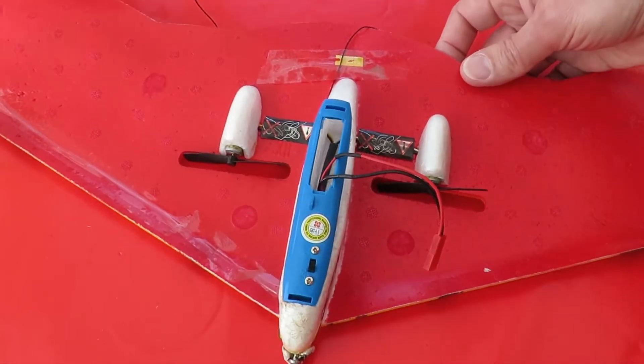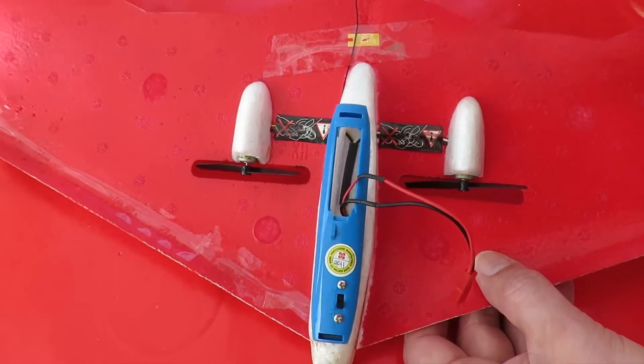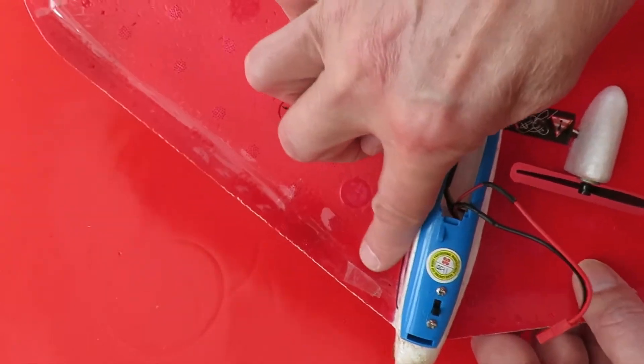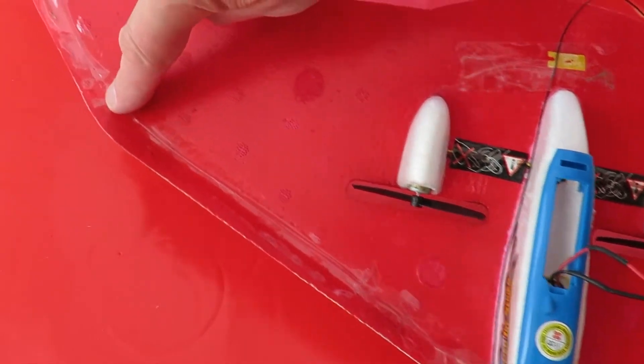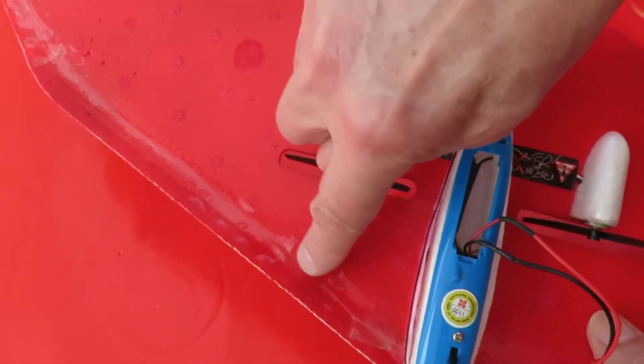Now first of all I've just realized looking at this that the aerial is supposed to be taped along the front wing here. I hadn't noticed that before but now I can see it clearly.